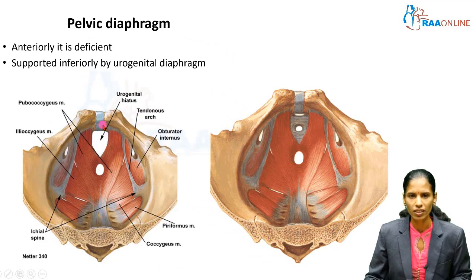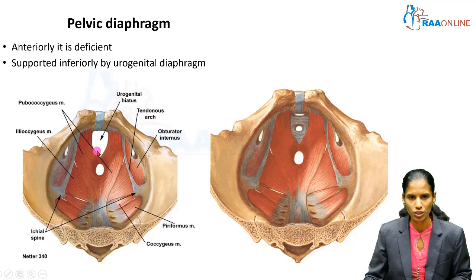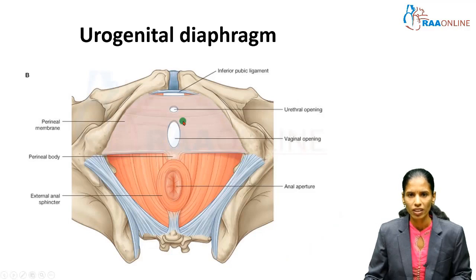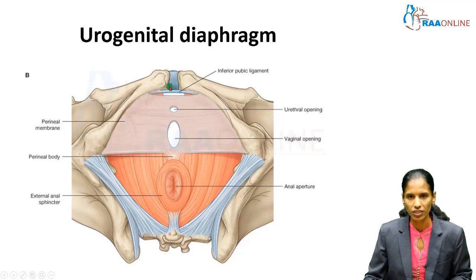The pelvic diaphragm does not cover the entire floor of the true pelvis — it is deficient in the anterior aspect, which is supported inferiorly by the urogenital diaphragm. You can see a small triangular deficient area in the first picture, and in the second picture this deficient part is enclosed by the urogenital diaphragm, which is present inferior to the pelvic diaphragm. The pelvic outlet is formed anteriorly by the pubic symphysis, on either side by the ischiopubic ramus, with the sacrotuberous ligament and the tip of the coccyx posteriorly.